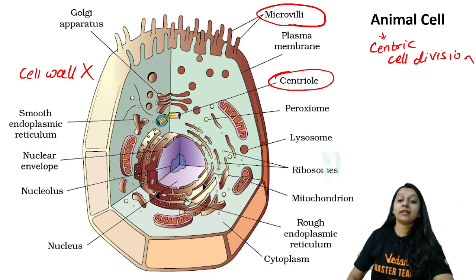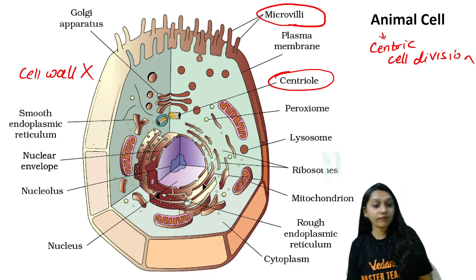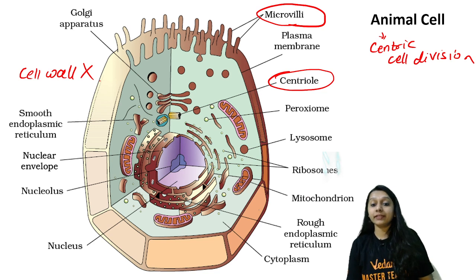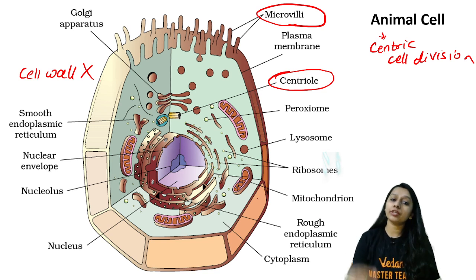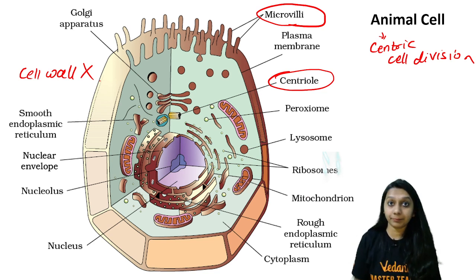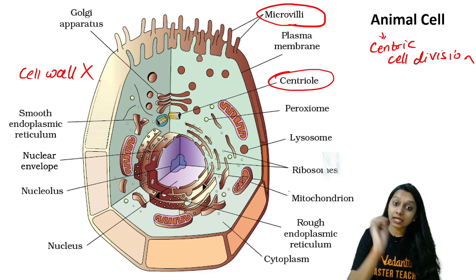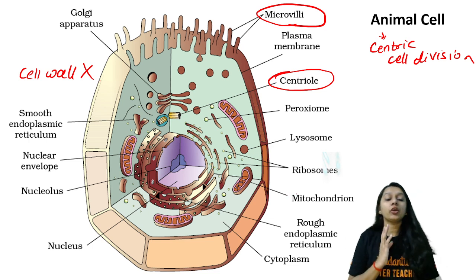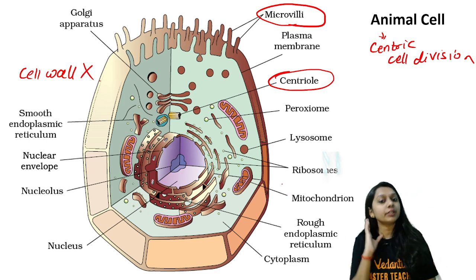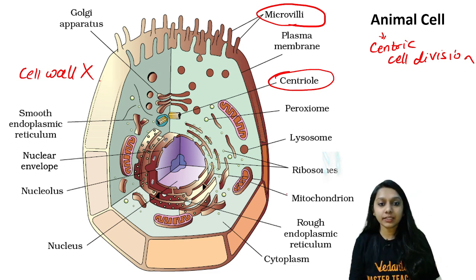What is important to remember: in animal cells there is no middle lamella or cell wall, but there are microvilli and centriole, which plant cells do not have. In animal cells, vacuoles are present but they are small and temporary. But in plant cells, there are large central vacuoles, and they are permanent.